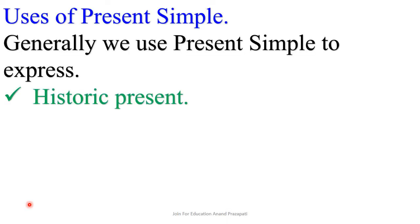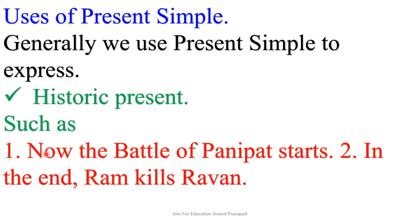Generally, we use present simple to express the historic present. To express the historic present, we use the structure of simple present. For example, 'Now the battle of Panipat starts.' The battle of Panipat already took place in the past, and it is a kind of historic present, therefore simple present is used. Similarly, 'In the end, Ram kills Ravana' is also a kind of historic present, so simple present is used.